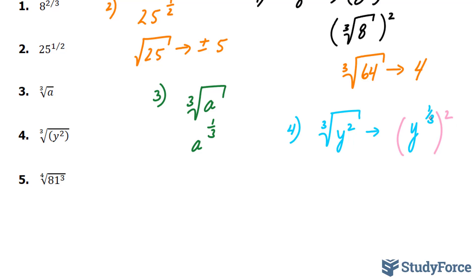Because 2 times a third is 2 over 3, same as if it were placed here, and we end up with y to the power of 2 over 3.